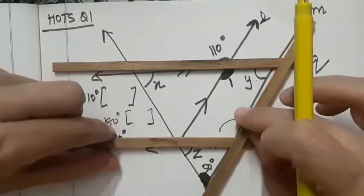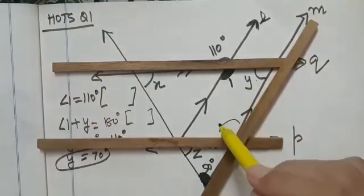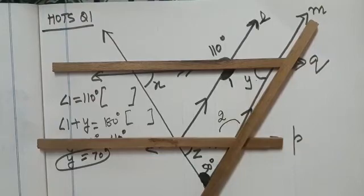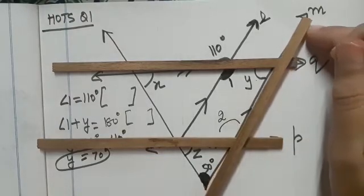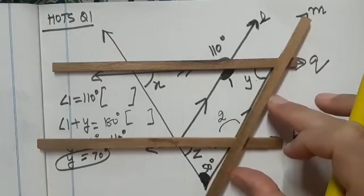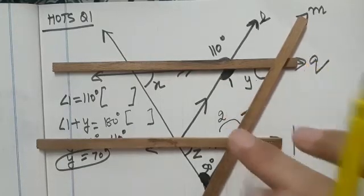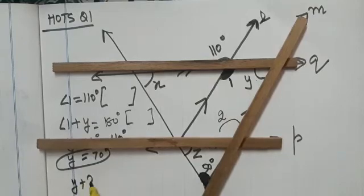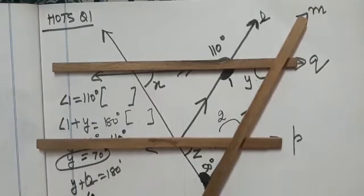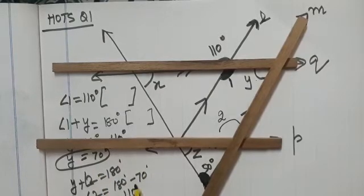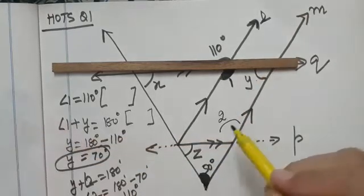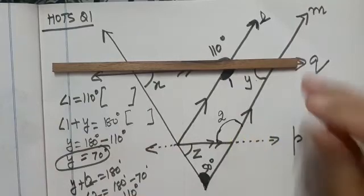It is again making a pair of co-interior angles. So what can you say about the marked angle? Let us say this is angle 2. Marked angle 2. So Y plus 2 will be equal to 180 degrees. So what is angle 2? 180 minus 70, because Y is 70. So that gives us 110 degrees. We have found angle 2. Angle 2 is 110 degrees.